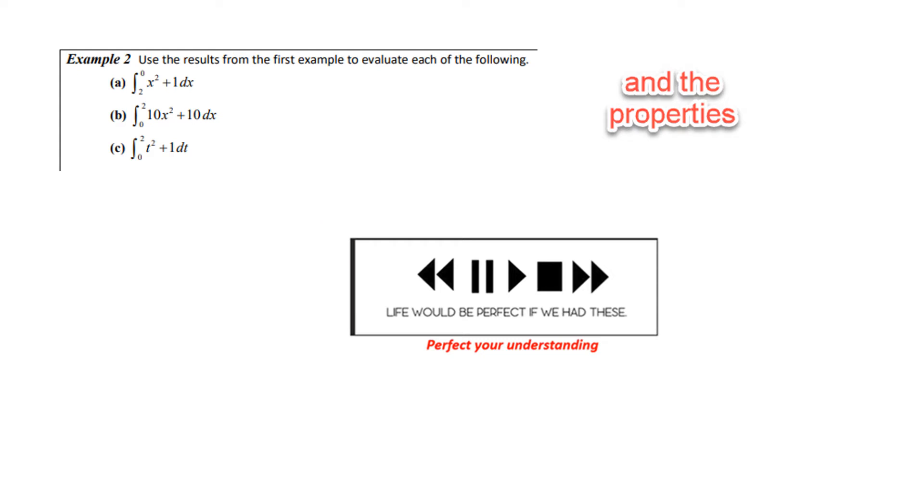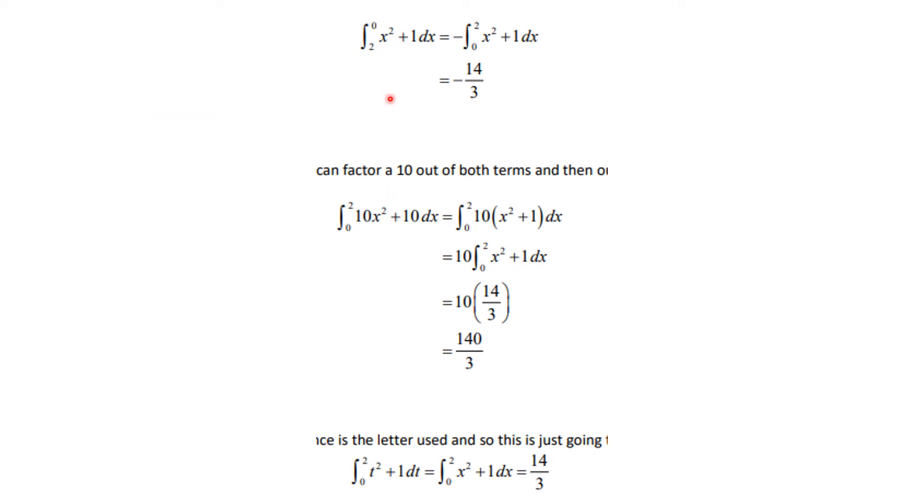Let's see how you did. Well, the first one, instead of going from 0 to 2, we're going from 2 to 0, so that had to be minus 14 over 3. And 14 over 3 was what we had for this integral without the minus sign that we computed. Here you could factor the 10 out. That's a constant, so you can jerk it through the integral, and then this thing is 14 over 3, so that is 10 times 14 over 3, which is 140 over 3. And this last one, it didn't matter whether it was f(t)dt or f(x)dx. You still get the same answer.